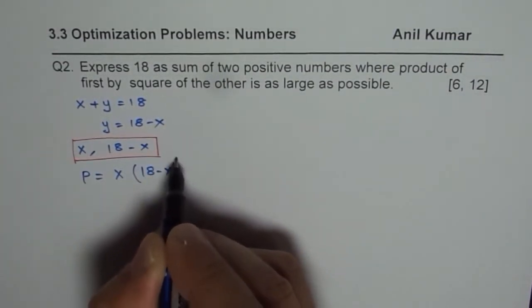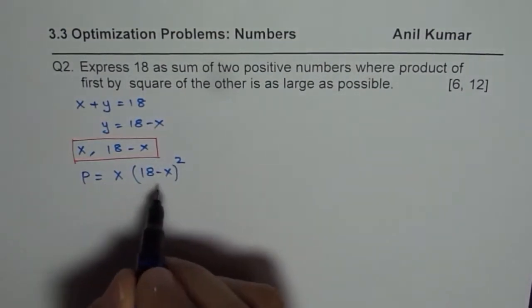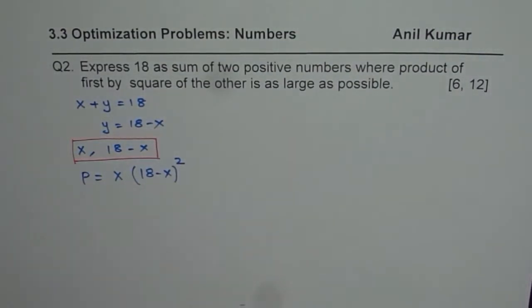So x times 18 minus x whole square. We want that to be maximum. So that is your question.